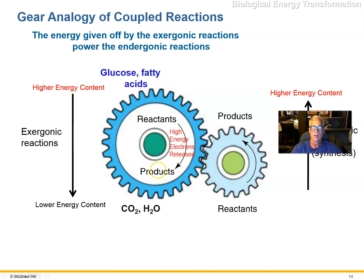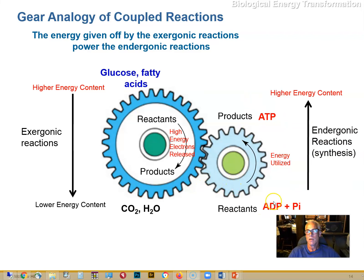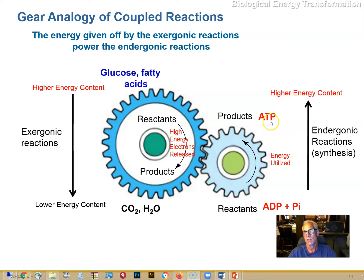The gear analogy of coupled reactions shows that the fuel molecules we take in are broken down into products — smaller molecules, ultimately CO2 and water — and in doing so we release energy, often in the form of high-energy electrons. We take those high-energy electrons and drive other reactions — for example, forming ATP. That's the coupled reaction: an exergonic reaction drives an endergonic reaction, taking adenosine diphosphate (ADP) and inorganic phosphate and combining them to form ATP, an energy storage molecule with a high-energy phosphate bond that we can utilize later.